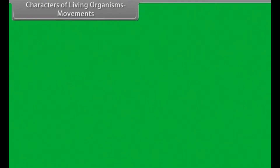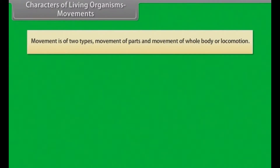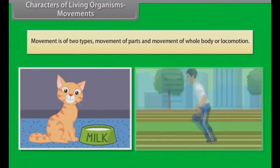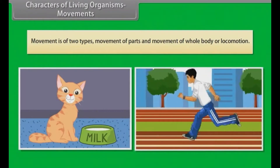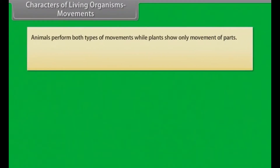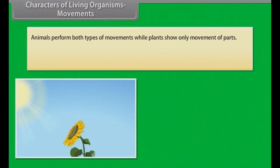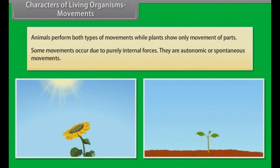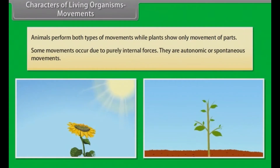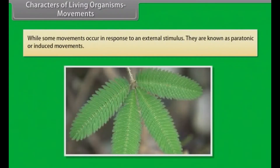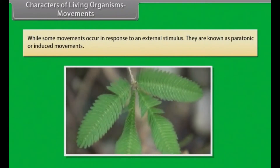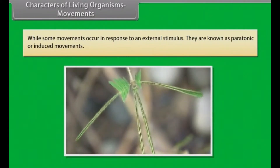Movement is of two types: movement of parts, and movement of the whole body, or locomotion. Animals perform both types of movements, while plants show only movement of parts. Some movements occur due to purely internal forces — these are autonomic or spontaneous movements. Some movements occur in response to an external stimulus — these are known as paratonic or induced movements.